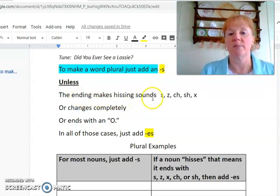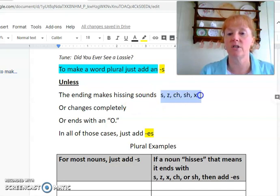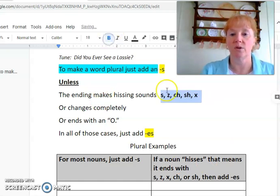But there are these other cases where if words have some endings like S, Z, C-H, S-H, or X, then those words you have to add E-S to the end. And we will look at some of those examples in a minute.